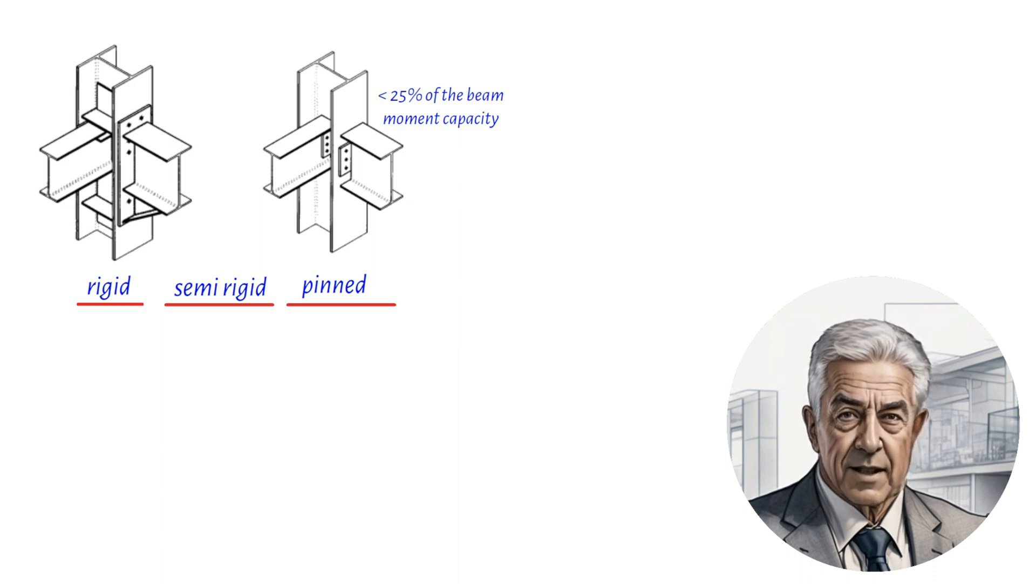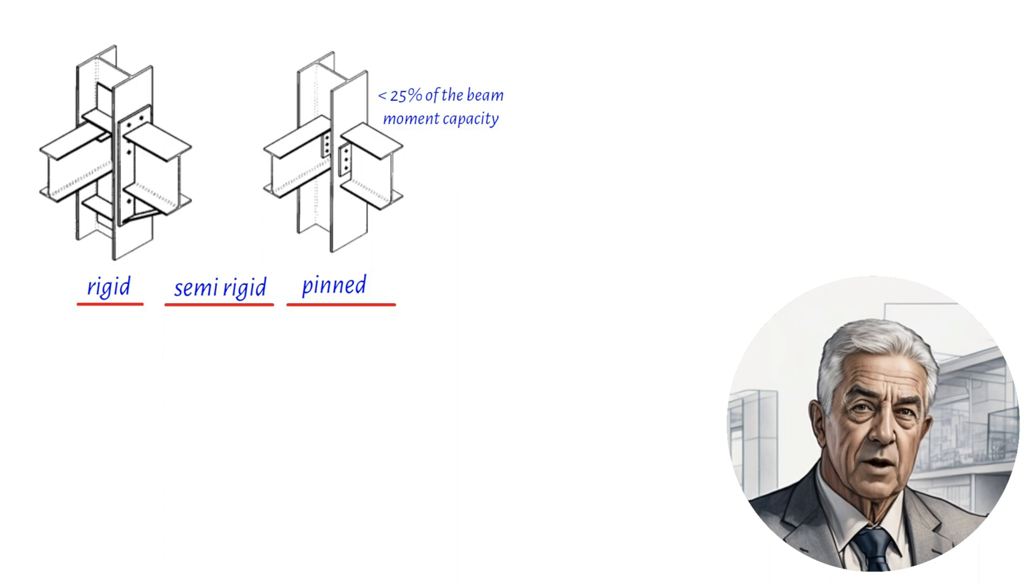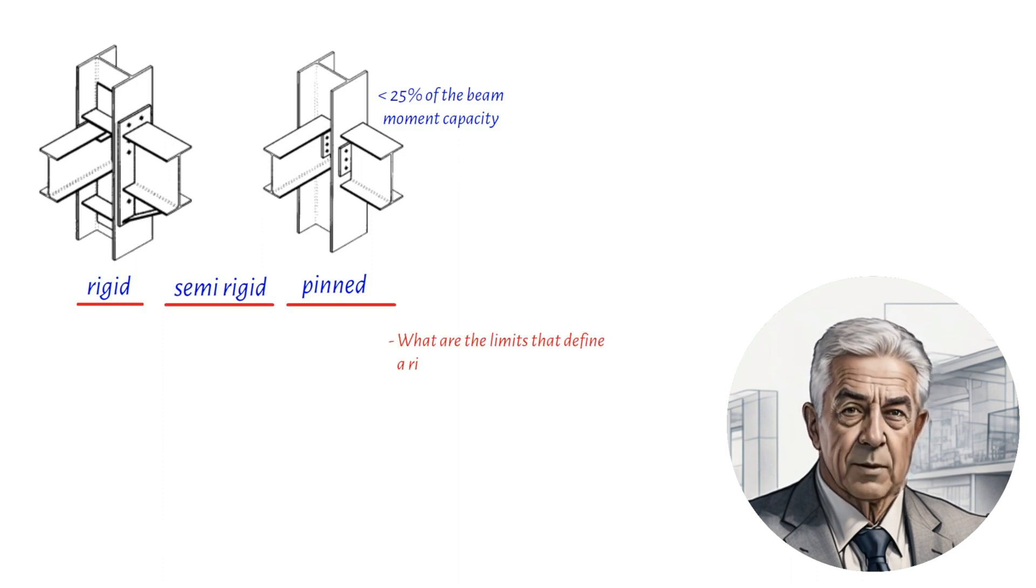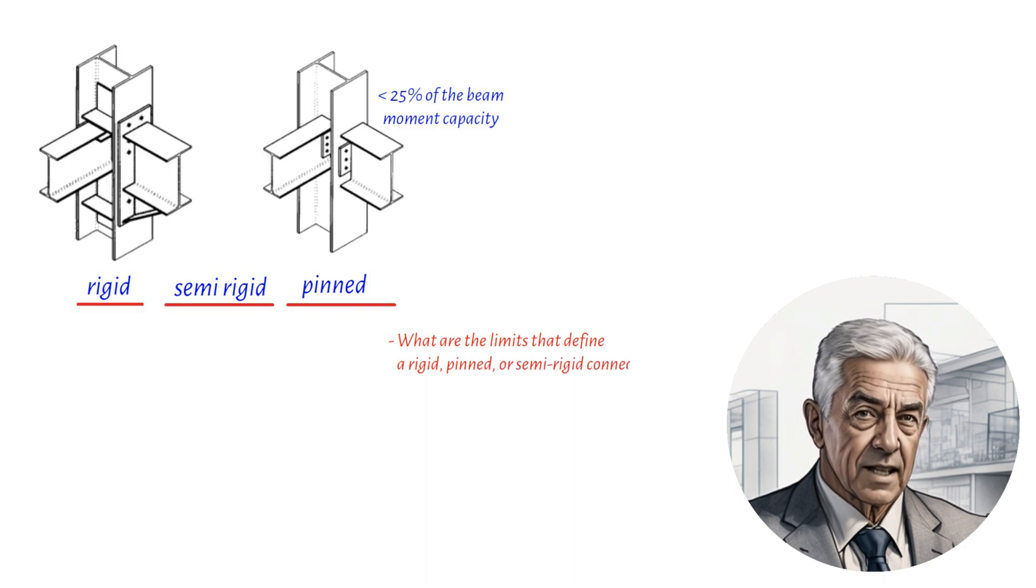In structural analysis, connections are commonly modeled as either completely rigid or completely pinned. However, this isn't entirely accurate as all connections have some degree of flexibility or stiffness. To take a more rigorous approach to modeling connections, two critical questions need to be addressed. Firstly, what are the limits that define a rigid, pinned, or semi-rigid connection? Secondly, how stiff is the specific connection being analyzed?